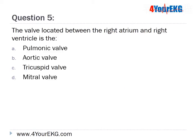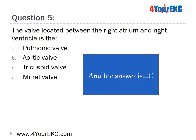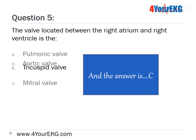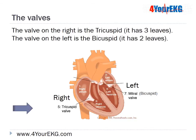Question 5: The valve located between the right atrium and right ventricle is — A. Pulmonic Valve, B. Aortic Valve, C. Tricuspid Valve, or D. Mitral Valve. The answer is C — Tricuspid Valve. The valve on the right side is the tricuspid valve, called that because it has three leaves. The valve on the left is called the bicuspid valve because it has two leaves.